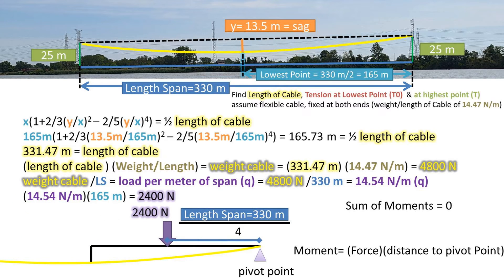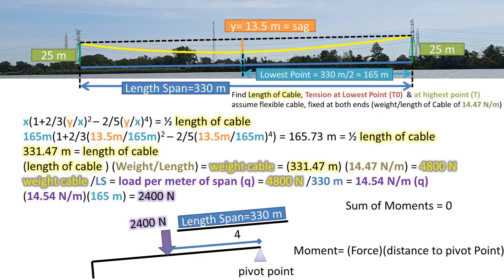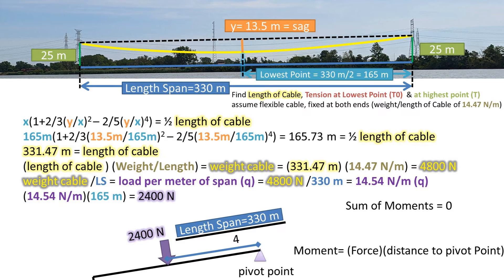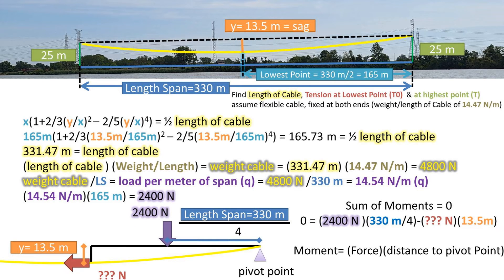We also have the load from the cable weight, which is 2400 newtons and is acting at the middle of this section because it is an evenly distributed load, so one quarter of the length of the span between the towers. This force is making the cable want to pivot this way. Being the sum of the moments equals zero, the moment caused by the weight of the cable minus the moment from the tension at the lowest point in the cable must equal zero.